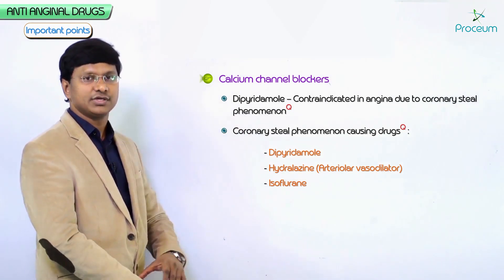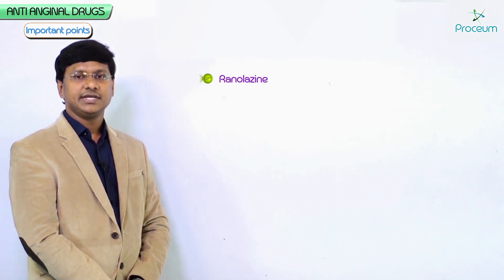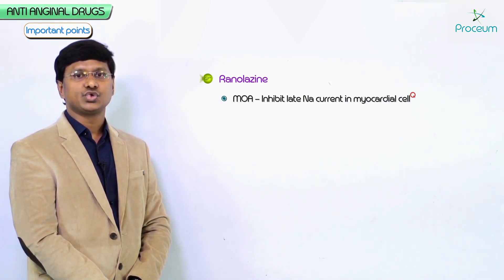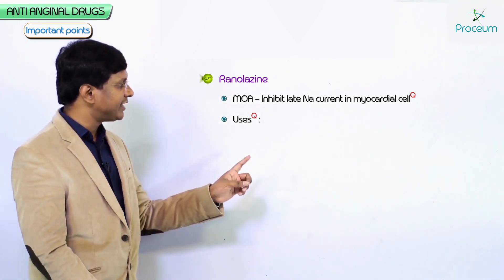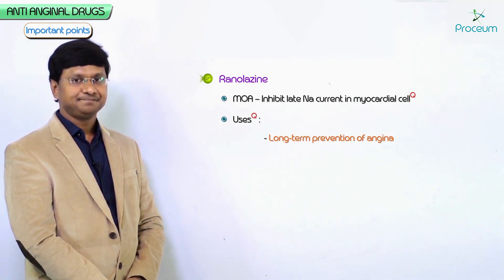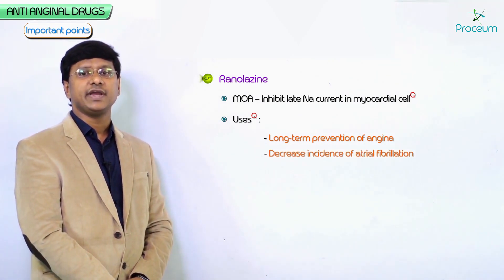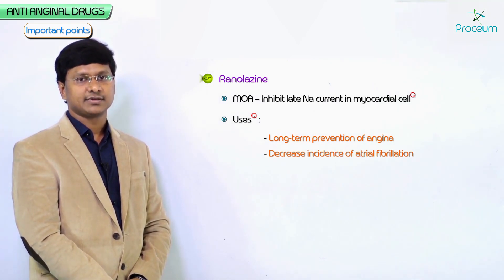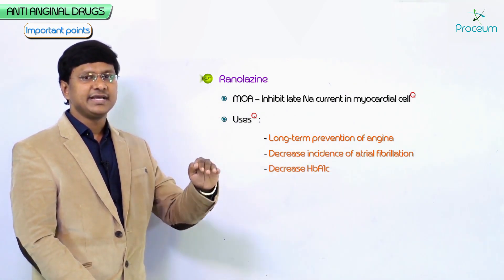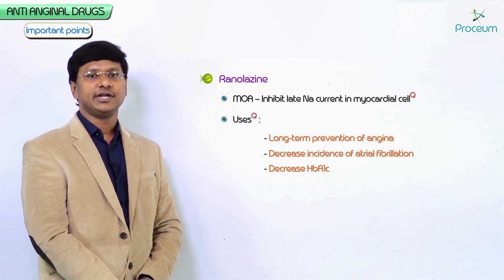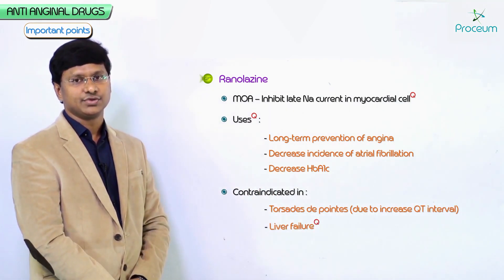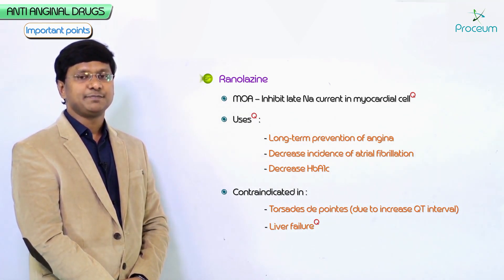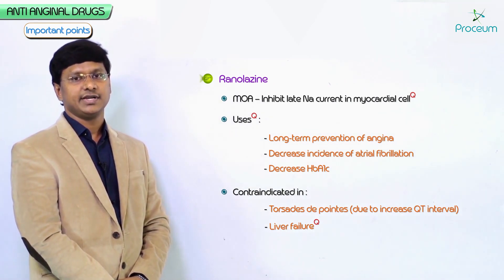Ranolazine acts by inhibiting the late sodium current in the myocardial cell. Its uses include long-term prevention of angina, decreasing the incidence of atrial fibrillation, and improving glucose profile by causing a minimal decrease in HbA1c. Ranolazine is contraindicated in torsades de pointes and liver failure because it increases the QT interval, which can precipitate torsades de pointes.